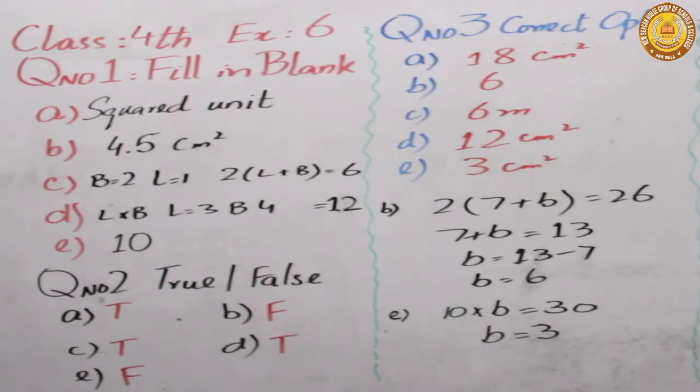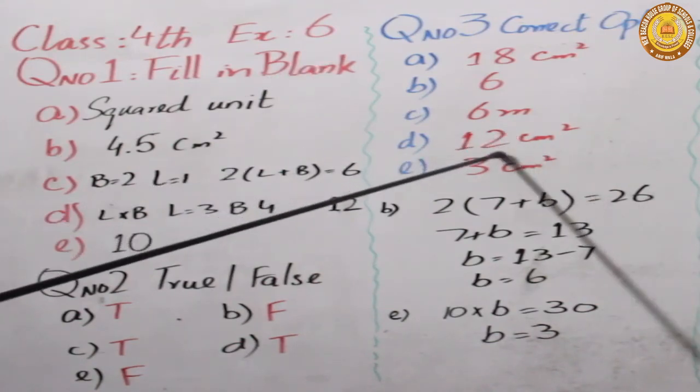C option pe aa jaye beta. Wahan pe likha hua hai aap ka area of the room is 42, its length is 7. Agar 42 hai length 7, 7 ko 42 divide kar dein, 7 pound shape ko yeh aap ka bane ga 12.